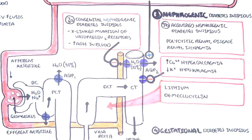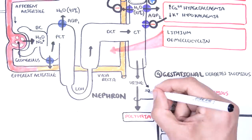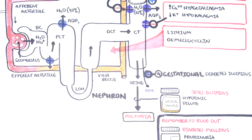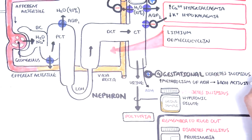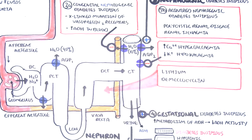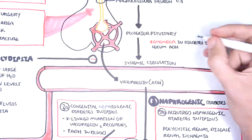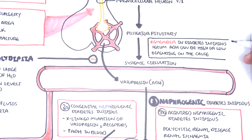Gestational diabetes insipidus occurs because antidiuretic hormone is metabolized by the liver and kidney and excreted by the kidneys. Gestational DI can cause an increase in the metabolism of ADH, resulting in less active ADH and low ADH levels in the blood. It's important to remember that in diabetes insipidus, serum ADH levels can be high or low depending on the cause.